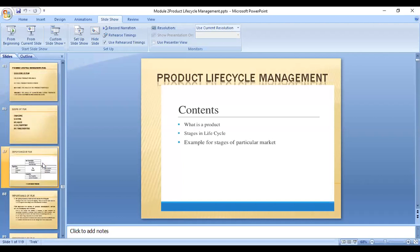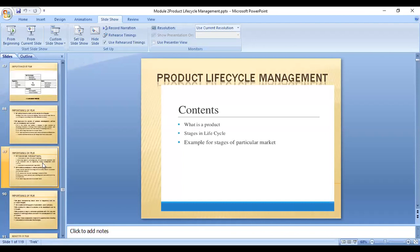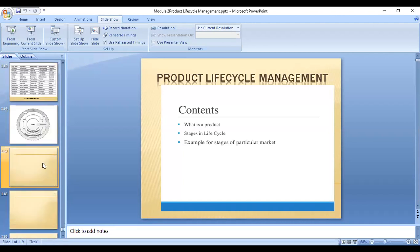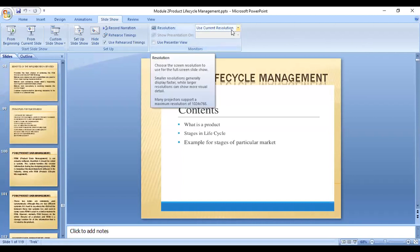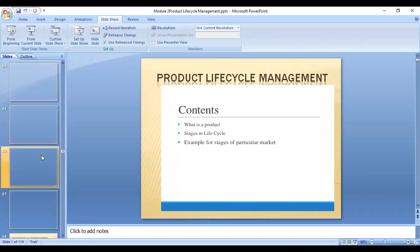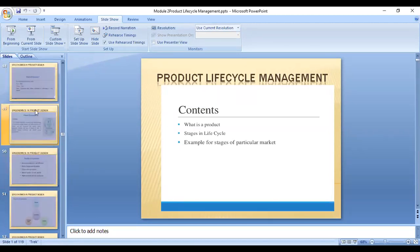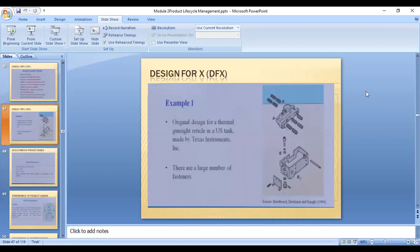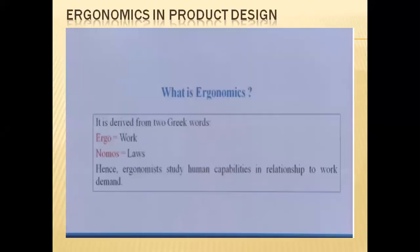We are about to start a discussion on the last topic of module 2, that is ergonomics. As we have already discussed in earlier classes, I will briefly recall what we studied - it was about design for excellence, that is design for manufacture, design for assembly, design for quality, design for reliability. Just to recall, it is one of the tools used in product design.